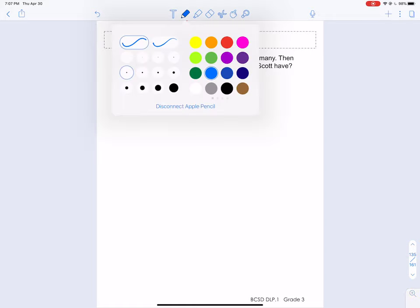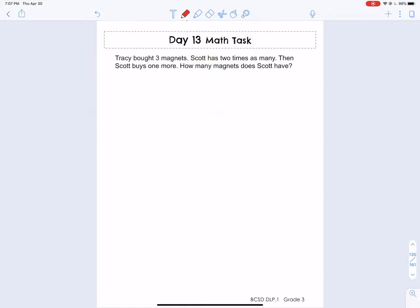Hey, BCSD third graders. Let's take a look at day 13 math task. Tracy bought three magnets. Scott has two times as many. Then Scott buys one more. How many magnets does Scott have?